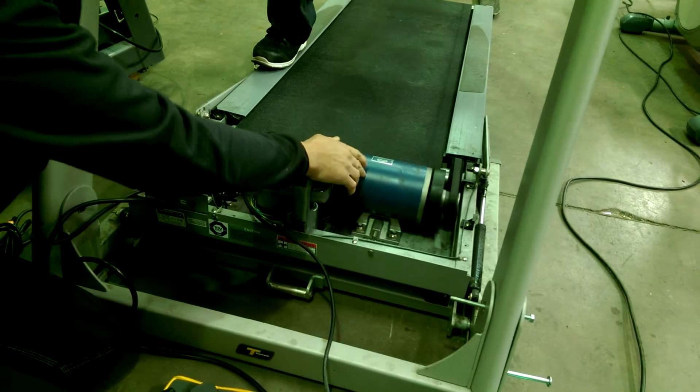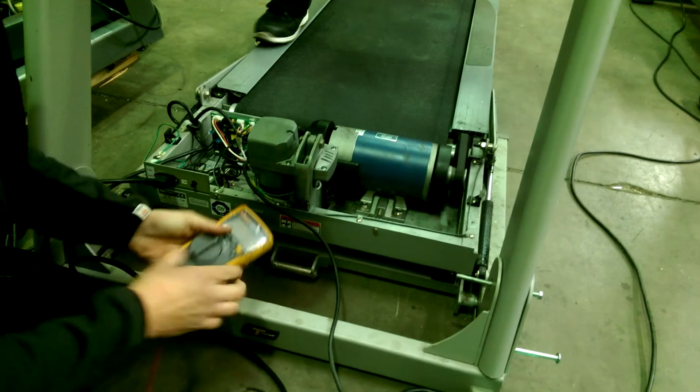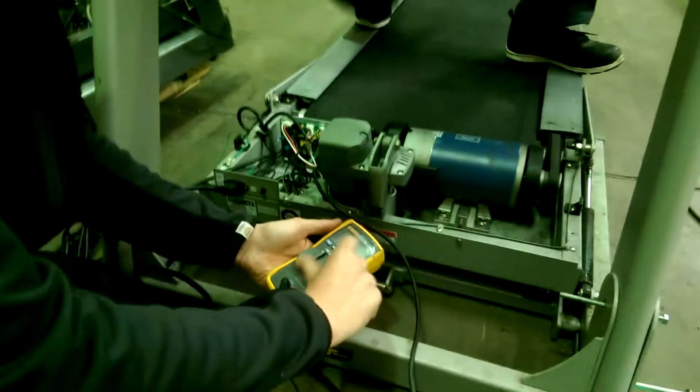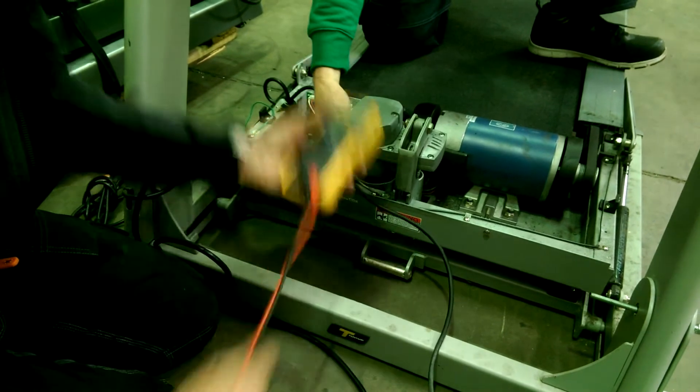So we can be pretty sure that the motor's faulty and we can prove that with a test meter. Besides seeing the flash and the sparks and the smoke, we're going to test that out by putting the test meter onto ohms.